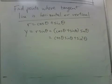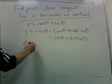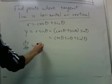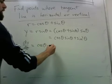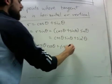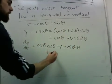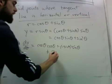And so dy/dθ will be cosine theta cosine theta plus negative sine theta sine theta. That's using the product rule of this and using the power rule of this.